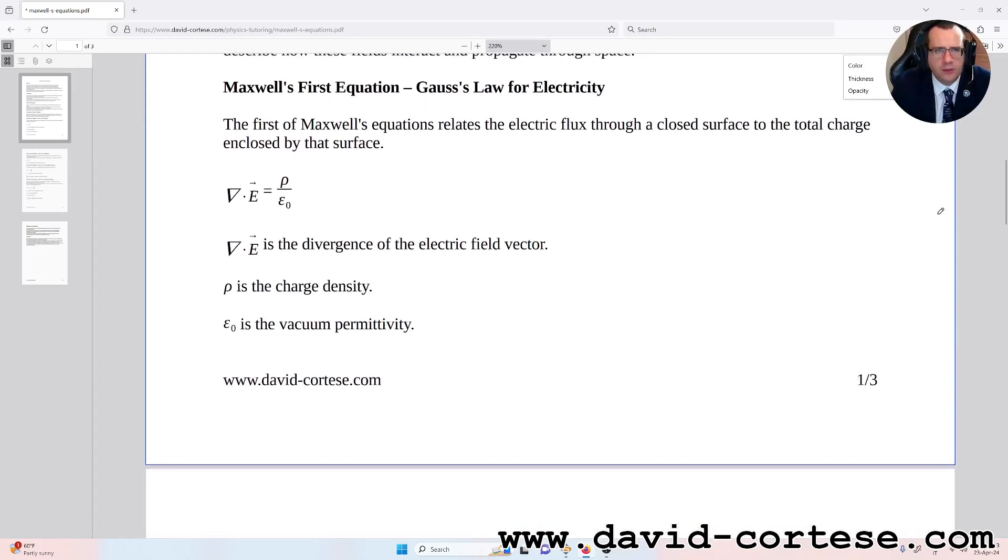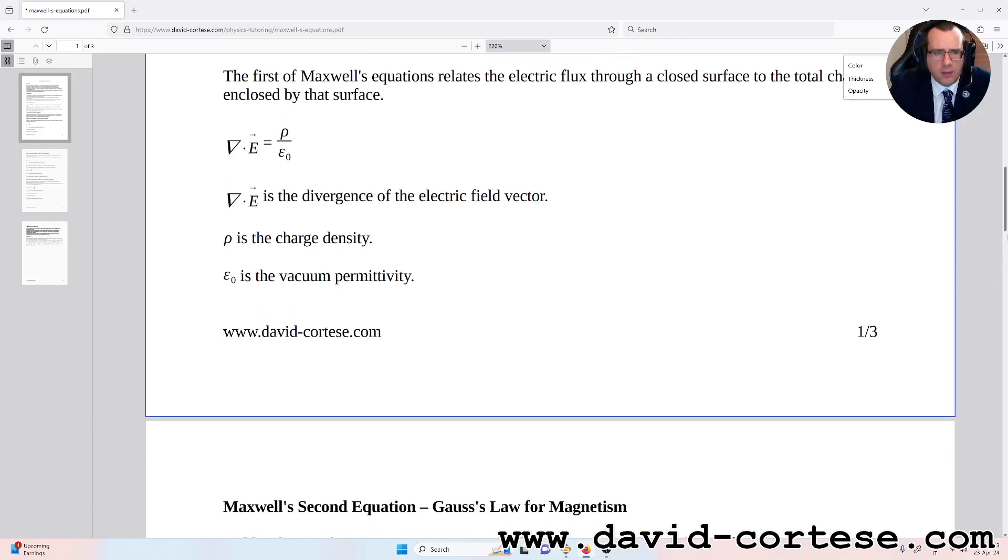Maxwell's first equation: Gauss's law for electricity. The first of Maxwell's equations relates the electric flux through a closed surface to the total charge enclosed by that surface. So, nabla scalar product E equals rho over epsilon zero. Nabla scalar product E is the divergence of the electric field vector. Rho is the charge density, epsilon zero is the vacuum permittivity.